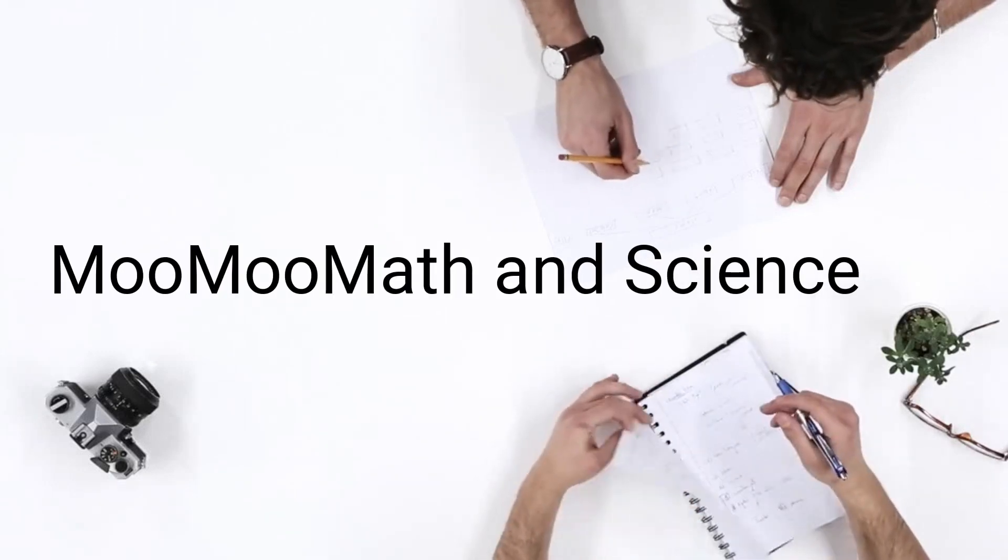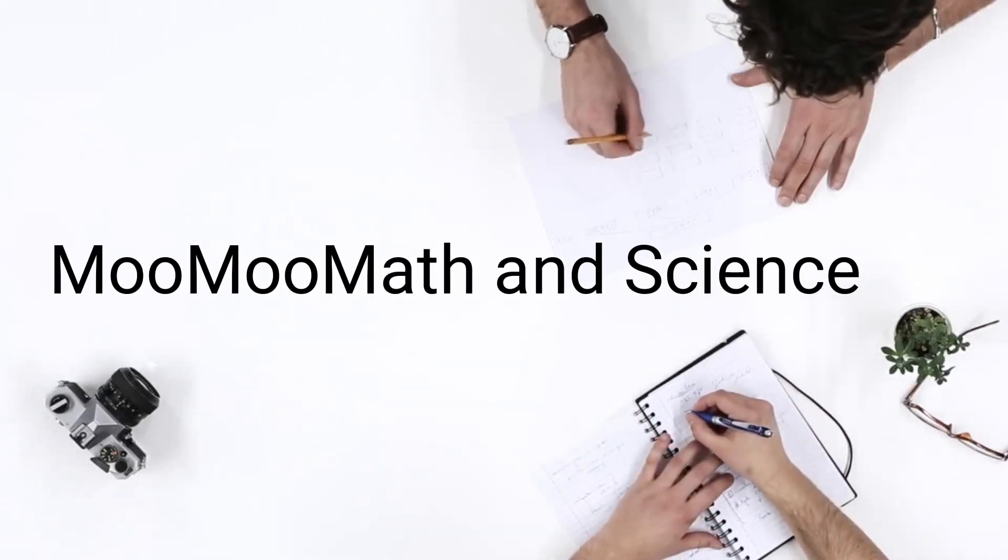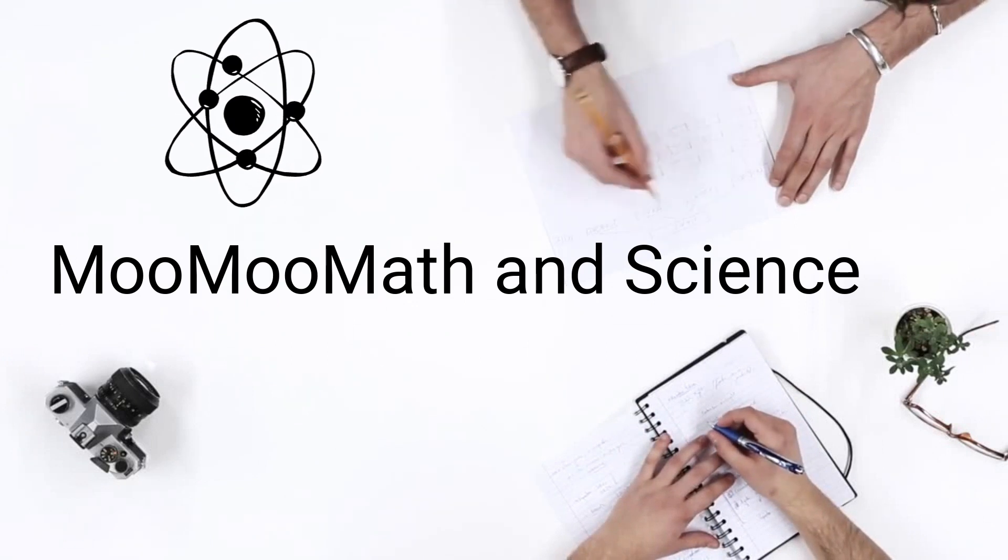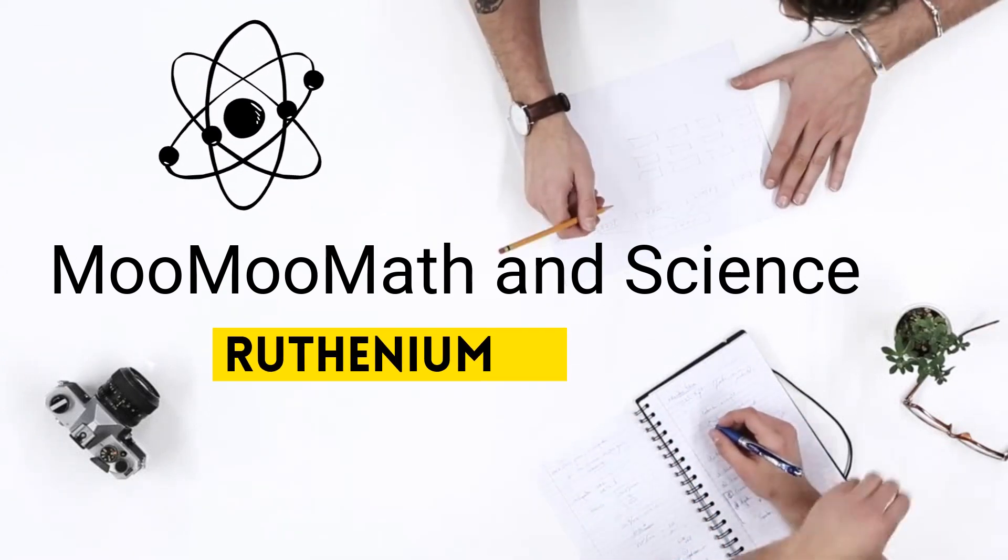Welcome to Moo Moo Math and Science. In this video I'd like to go over the electron configuration of ruthenium and it is an exception to the normal rules.